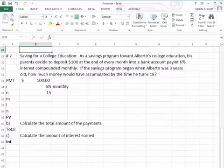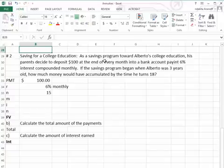All right, let's take another problem. Saving for a college education. As a savings program towards Alberto's college education, his parents decided to deposit $100 at the end of every month into a bank account, paying 6% interest compounded monthly. If the savings program began when Alberto was three years old, how much money would he have accumulated by the time he turns 18?